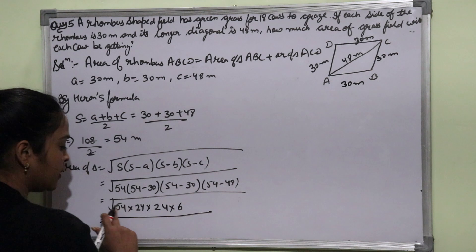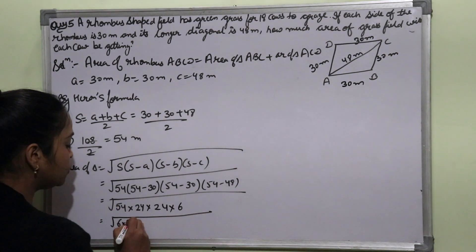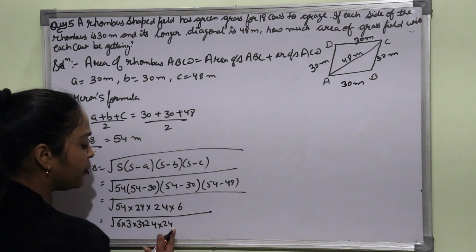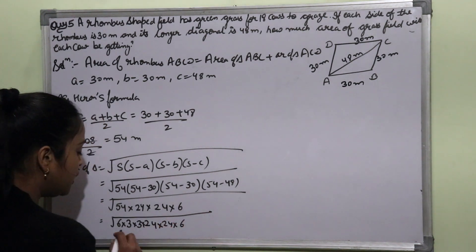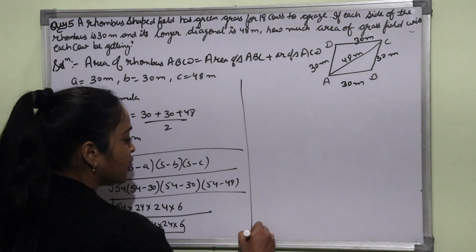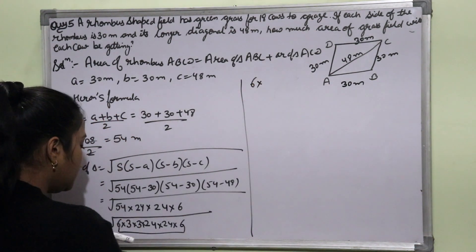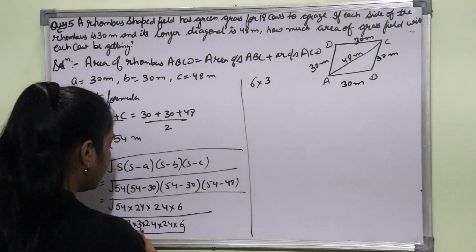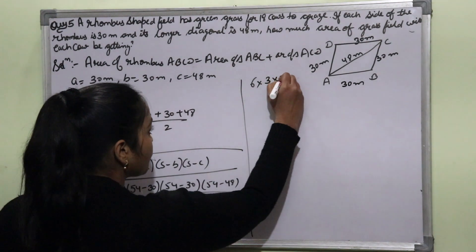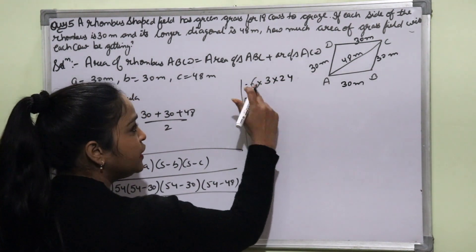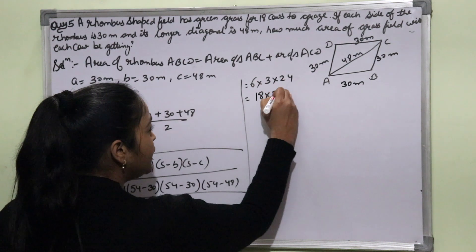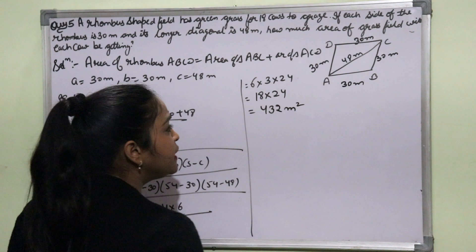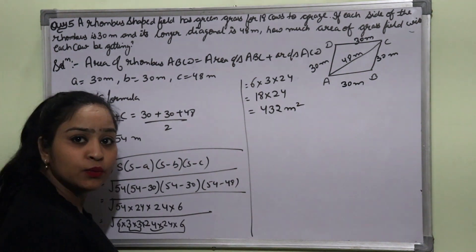We factorize: 6 = 6, 24 into 24 forms a pair directly. Taking pairs out of the root: 6 × 3 = 18, and 18 × 24 = 432. So the area of one triangle is 432 square meters.